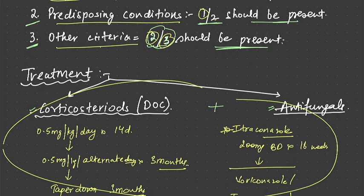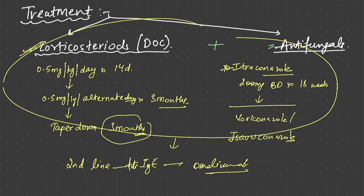Treatment includes corticosteroids and antifungals. For the purpose of MCQs, if someone asks what is the drug of choice for ABPA, it is obviously corticosteroids: 0.5 mg per kg per day to start with. We taper off by three months. Antifungals are also a must to be given along with corticosteroids. We use itraconazole 200 mg BD for 16 weeks.